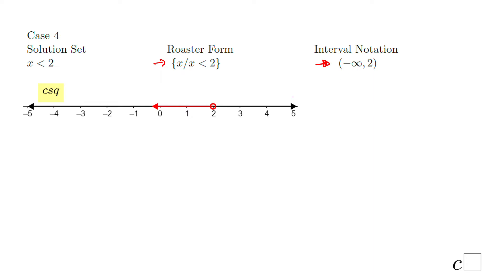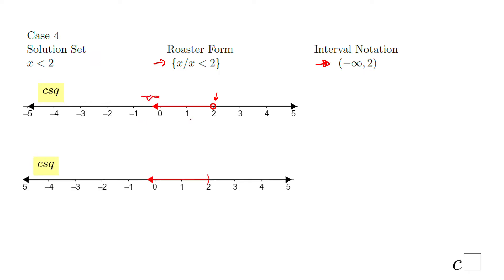The graphical solution: empty dot, shading to the left towards negative infinity. This is the second way when you use a parenthesis. You notice the parenthesis is open towards the left, the same as in the interval notation.